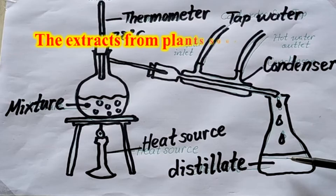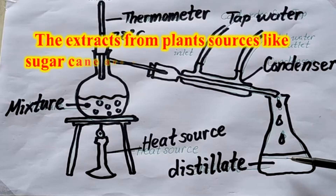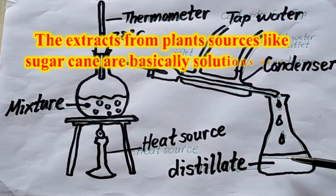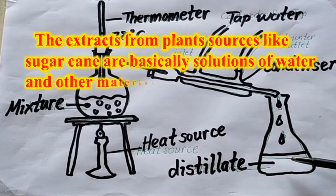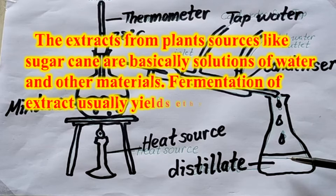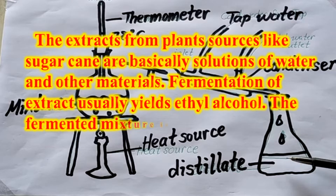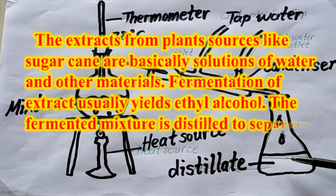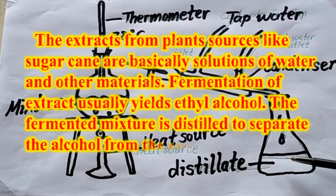The extract from plant sources like sugarcane are basically solutions of water and other materials. The fermentation of the extract usually yields ethyl alcohol. The fermented mixture is then distilled to separate the alcohol from the extract.